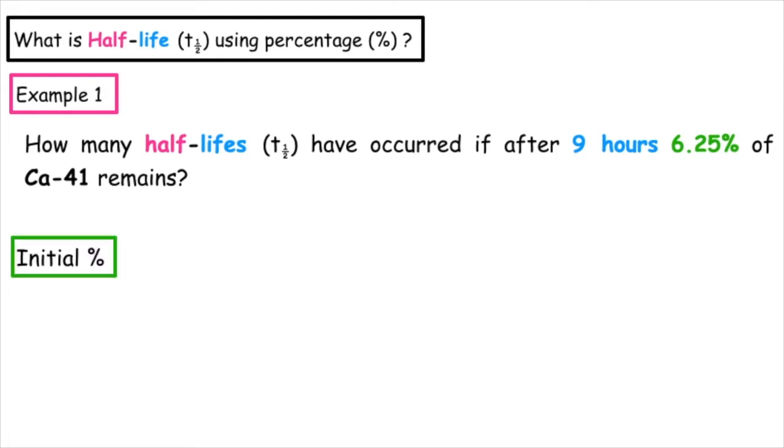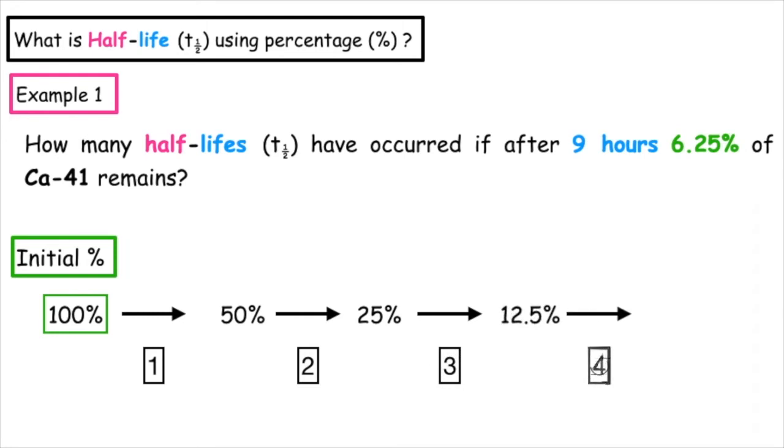Our initial percentage is always 100%. If we take one half-life, half of 100 gives us 50%. If we undergo a second half-life, that will give us a remaining total of 25%. Third half-life would produce 12.5% and a fourth half-life would produce 6.25%. So the answer is four half-lives.